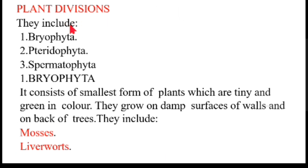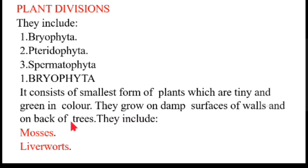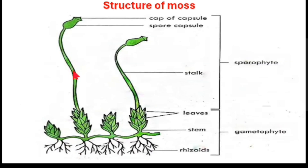Now we have plant divisions. In Kingdom Plantae we mainly have three divisions: Division Bryophyta, Division Pteridophyta, and Division Spermatophyta. To begin with, Bryophyta consists of the smallest forms of plants — they are very tiny and green in color. They grow on damp surfaces of walls, on the bark of trees, and on wet rocks. Good examples include mosses and liverworts.